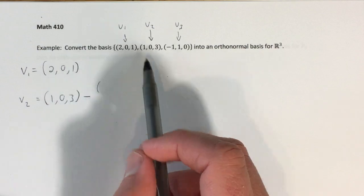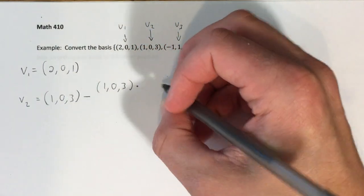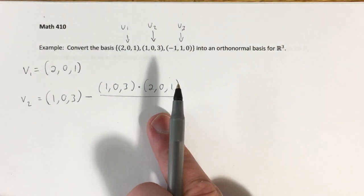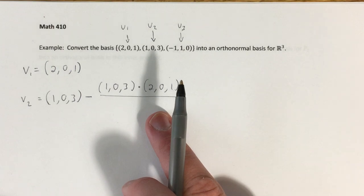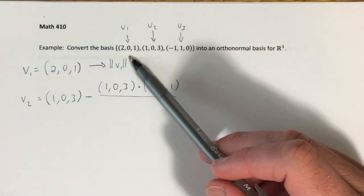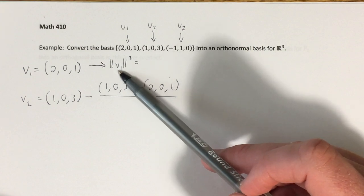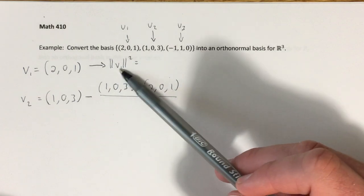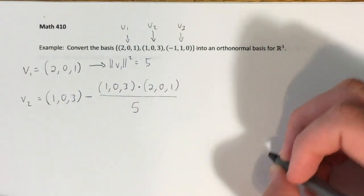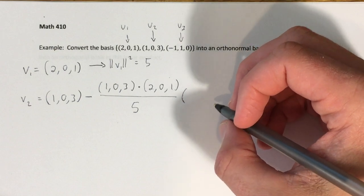We want the dot product of U2 with V1. So that's going to be (1, 0, 3) dotted with V1, which is (2, 0, 1). The next thing we need is the magnitude of V1 squared. When you evaluate a norm of a vector in Rn with the dot product, it's the square root of something, and squaring it just does away with the square root. So it's 2 squared plus 1 squared, which is 5. That's the scalar we divide by.